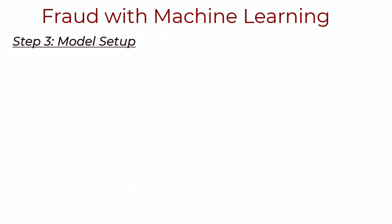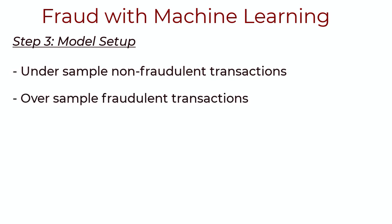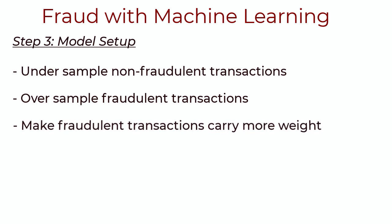The next step is the model setup. A typical characteristic of fraud data is that it's imbalanced — there are far more non-fraudulent transactions than fraudulent ones. You could undersample the non-fraudulent data and oversample the fraudulent transactions so the model learns something meaningful. Weighting fraudulent examples more heavily may also be useful, though you'll need to experiment since it really depends on your data and objective.